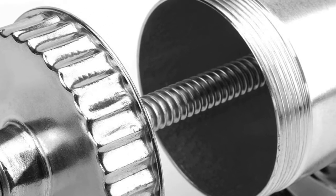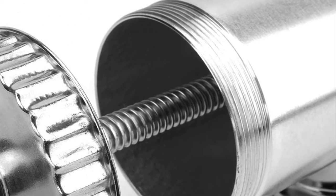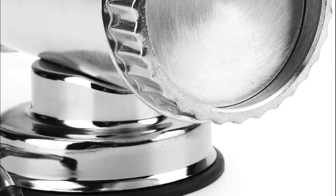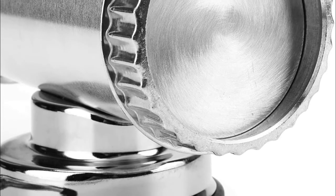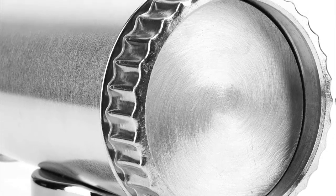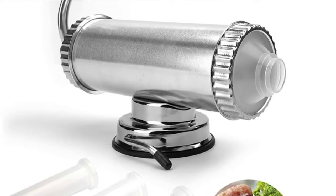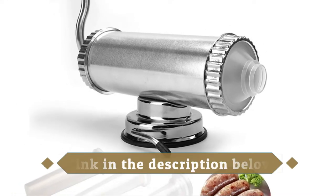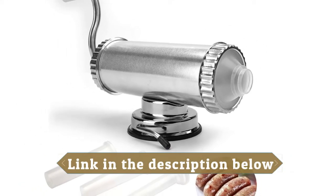Adopt suction cup base to ensure a firm and secure grip to your kitchen table. Sausage stuffers machine with three different diameter sausage stuffing tubes: 15 millimeters, 19 millimeters, and 22 millimeters will allow you to make quite a variety of sausage and make fresh sausages easily at home.